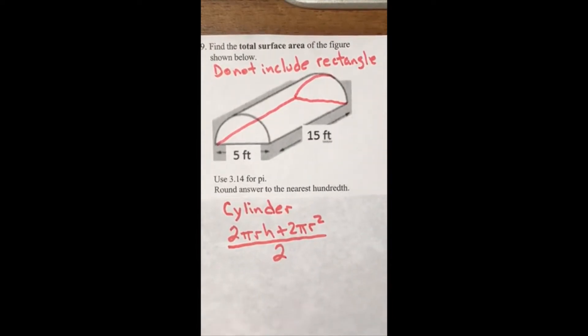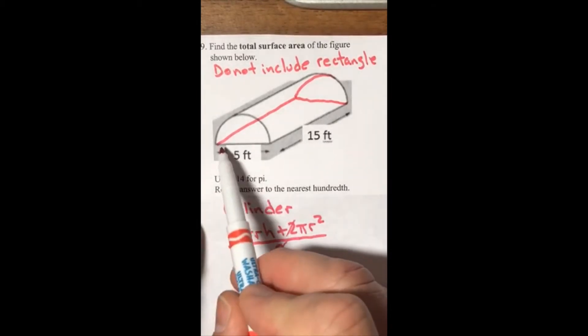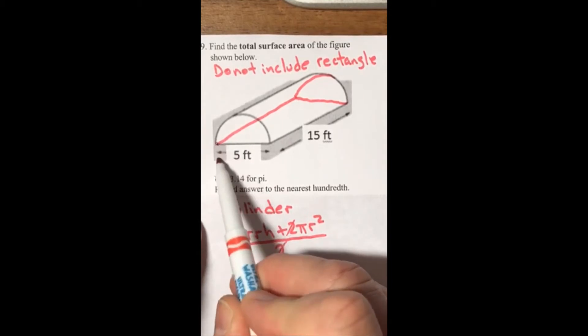You want to go ahead and cross out the twos here, and the twos can cancel out. And we're left with πrh + πr².